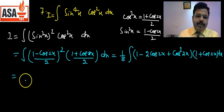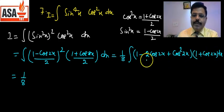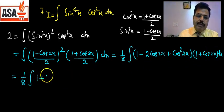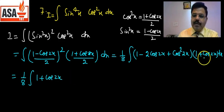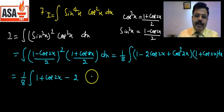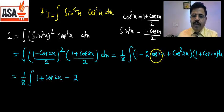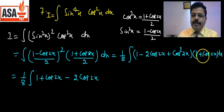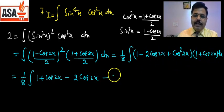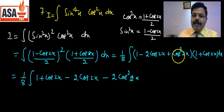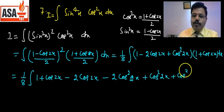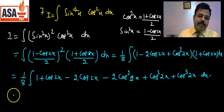1/8 × (1 − 2cos2x + cos²2x)(1 + cos2x) expand करें: 1 multiplied by (1 + cos2x) = 1 + cos2x; minus 2cos2x multiplied by (1 + cos2x) = −2cos2x − 2cos²2x; plus cos²2x multiplied by (1 + cos2x) = cos²2x + cos³2x।